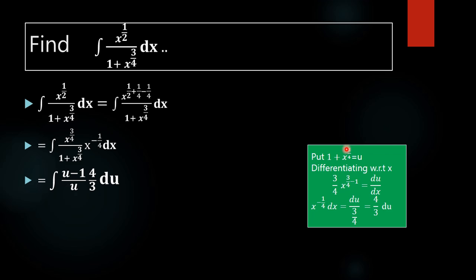Putting 1 plus x raised to 3/4 equal to u, then x raised to 3/4 equals u minus 1. Differentiating with respect to x: 1 becomes 0, and the derivative of x raised to 3/4 is 3/4 times x raised to 3/4 minus 1, which is 3/4 times x raised to minus 1/4, equal to du/dx. So du equals 3/4 times x raised to minus 1/4 dx, which means x raised to minus 1/4 dx equals 4/3 du.